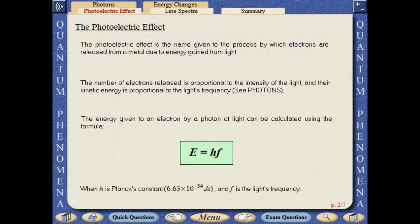The energy given to an electron by a photon can be calculated using the formula E equals hf.